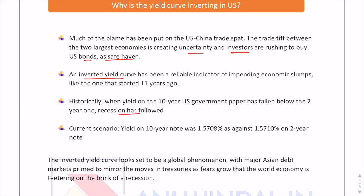What is the current scenario? The yield on the 10-year note is 1.5708% and on the 2-year note it is 1.5710%. The spread has been narrowed, and this is why there is an inverted yield curve — here it is a negative spread. This inverted yield curve in the US is also affecting other Asian economies. Asian debt markets are moving towards this fear of recession; for example, the spread between Singapore's 2-year and 10-year yields narrowed to 1 basis point, the lowest gap since November 2006.